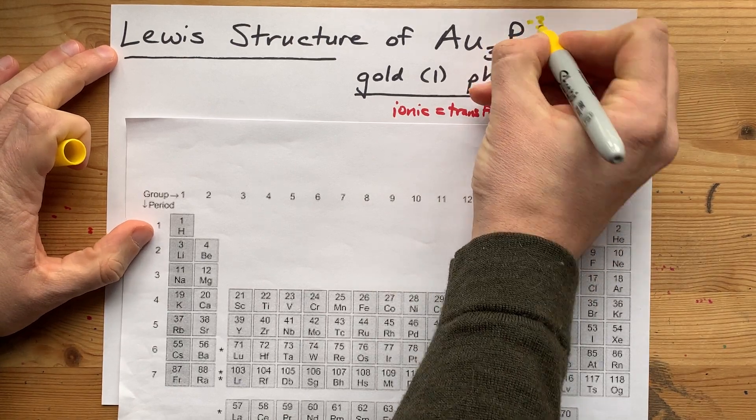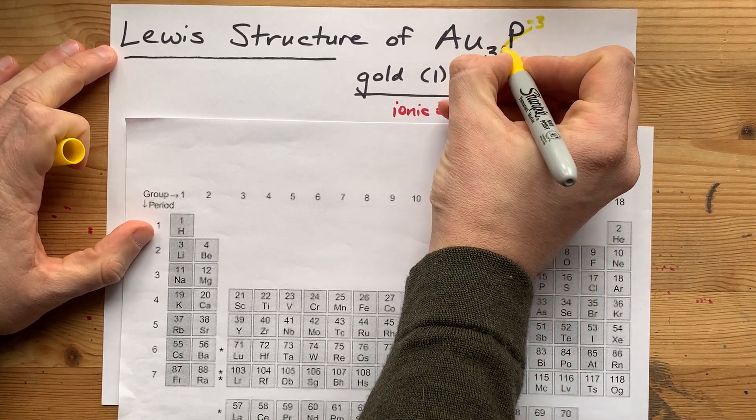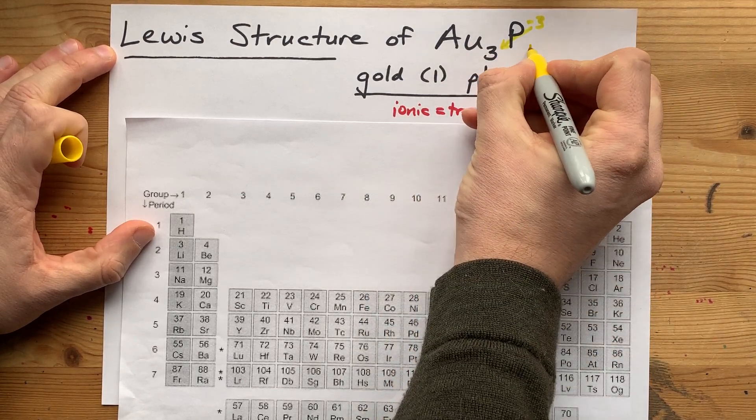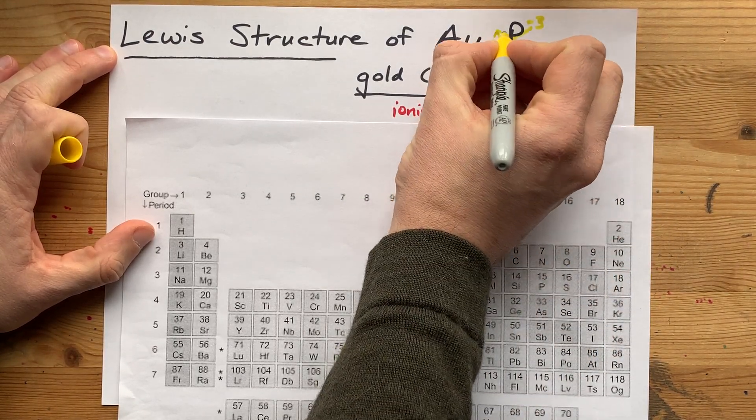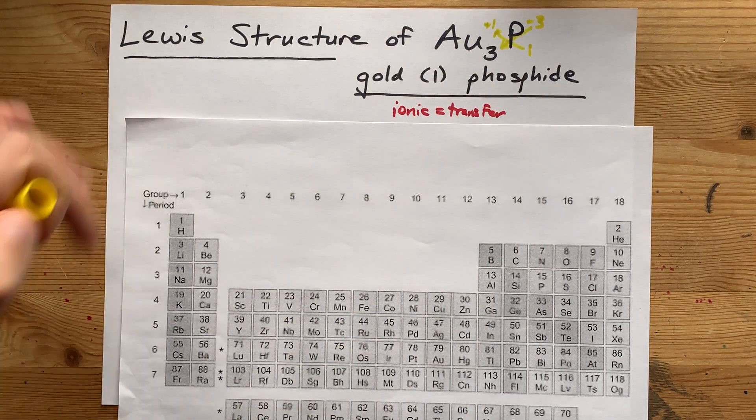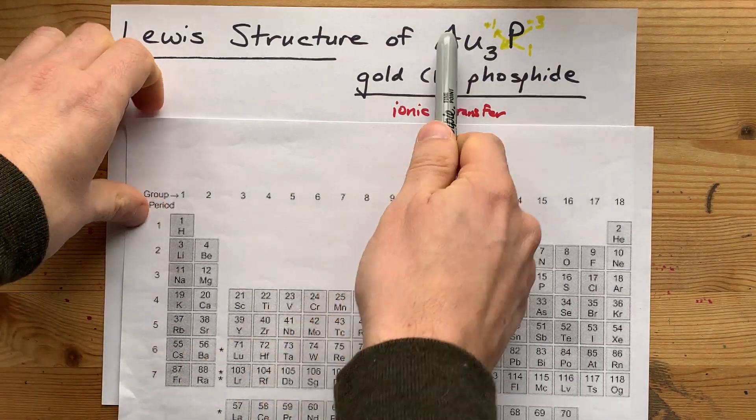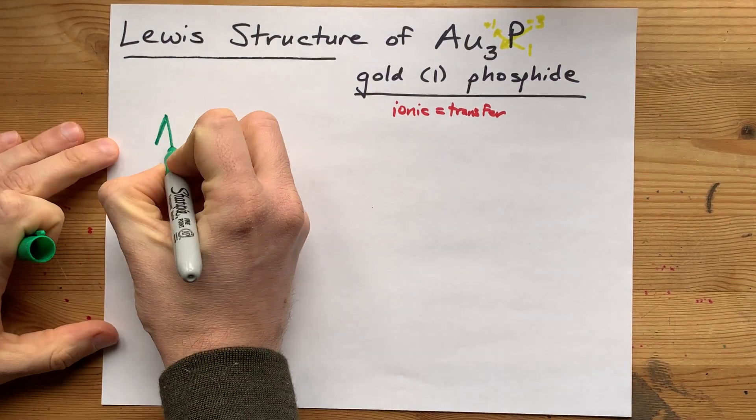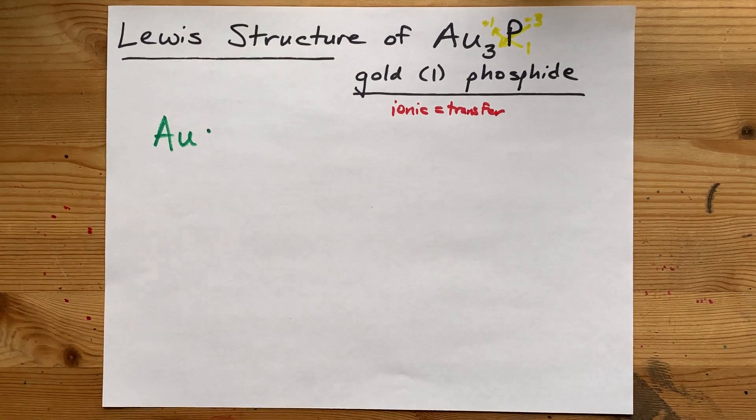So, the minus 3 charge on phosphorus is what crisscrossed down to require 3 golds. And the 1 that's not written on phosphorus had been crisscrossed from the charge that had been on gold. This gold had a charge of positive 1. So, in the Lewis structure, I want you to give yourself a gold with 1 valence electron.